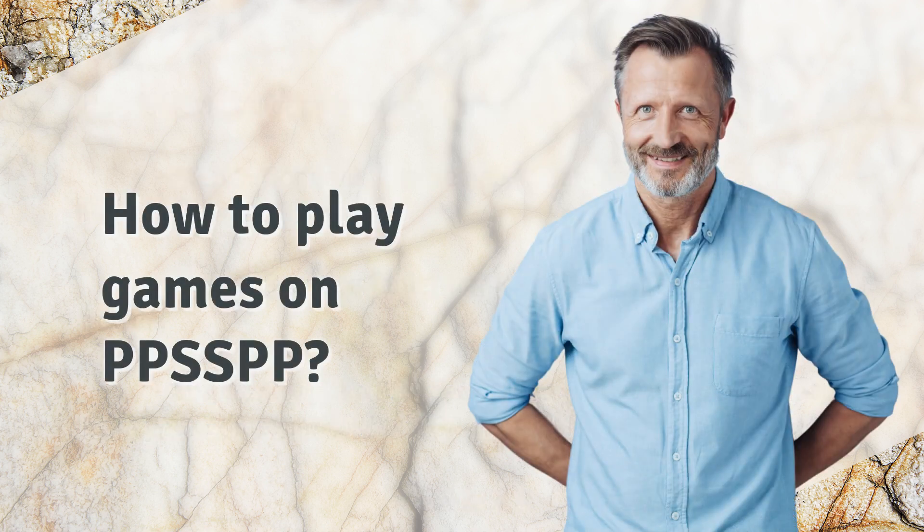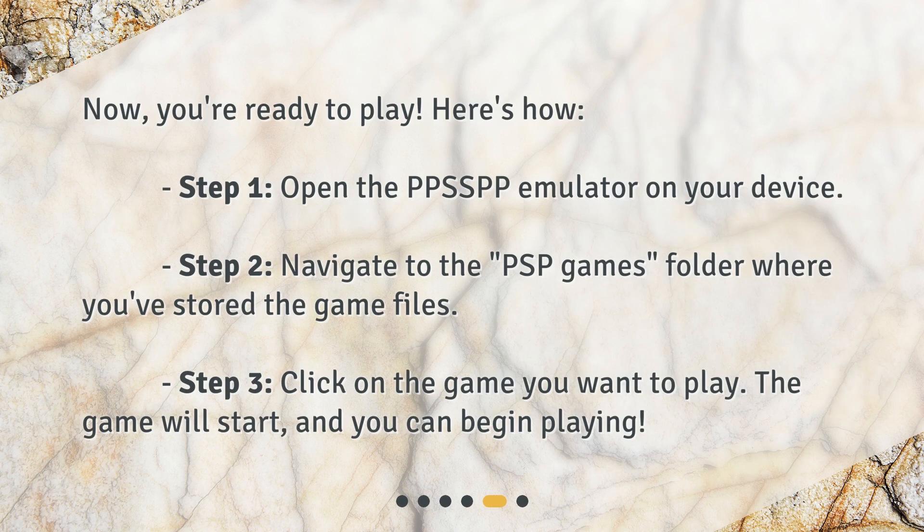How to play games on PPSSPP. Now you're ready to play. Step 1: open the PPSSPP emulator on your device. Step 2: navigate to the PSP games folder where you've stored the game files. Step 3: click on the game you want to play. The game will start, and you can begin playing.